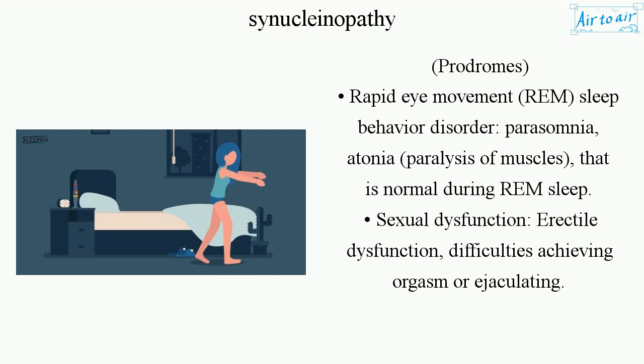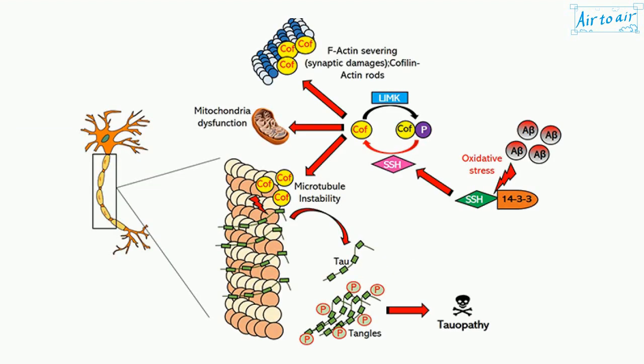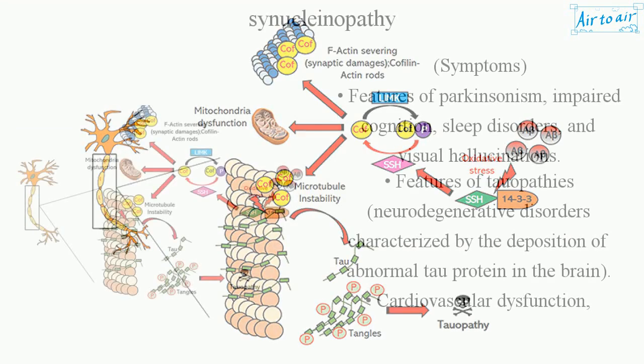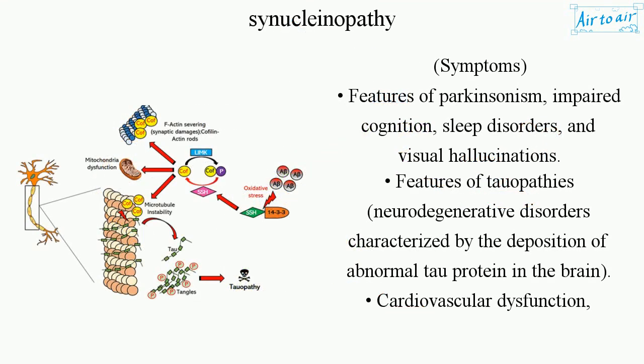Sexual dysfunction includes erectile dysfunction and difficulties achieving orgasm or ejaculating. Symptoms include features of Parkinsonism, impaired cognition, sleep disorders, and visual hallucinations.